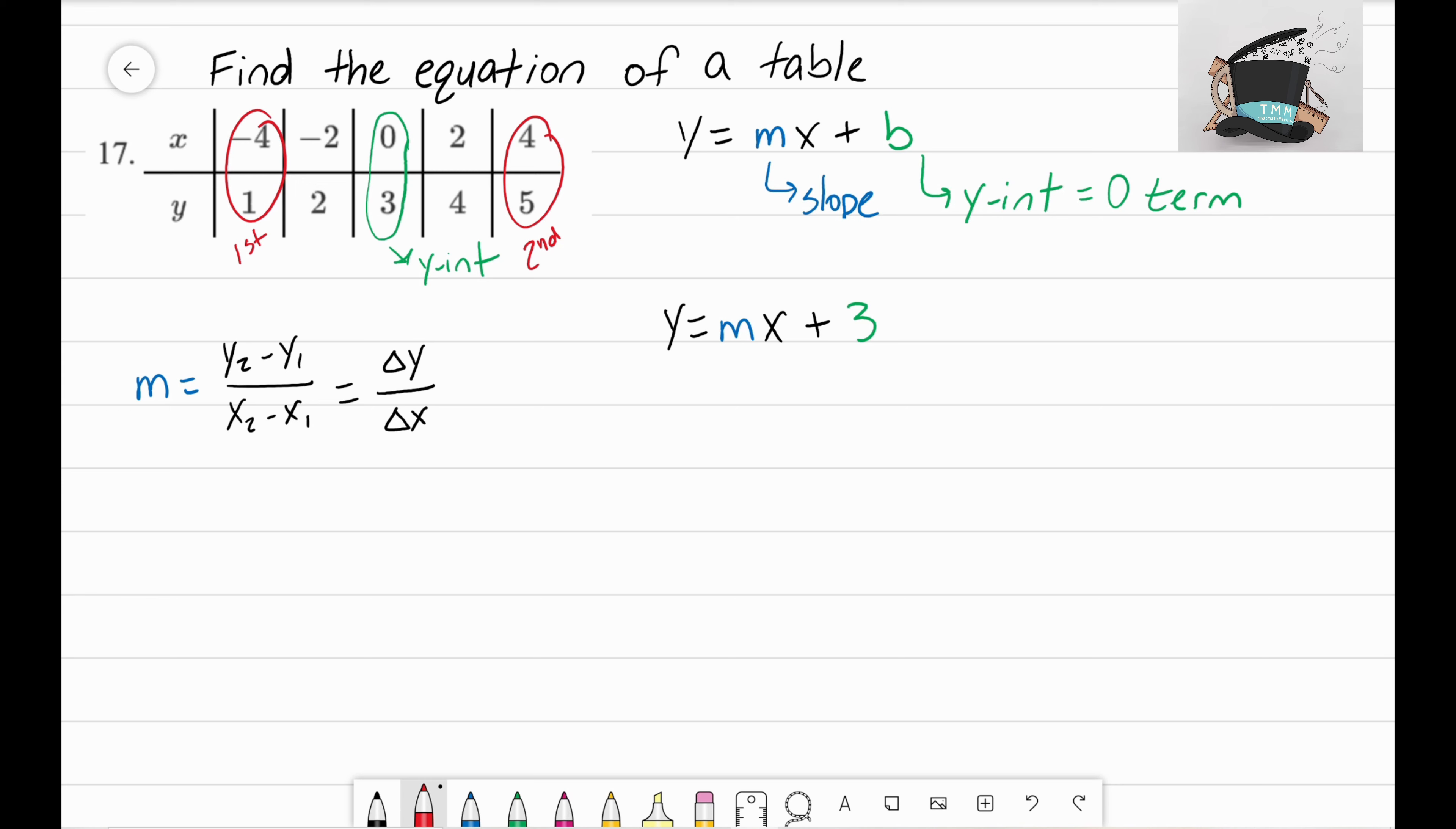We have y2 minus y1. Well, my y2 here is 5 minus my y1 which is 1, over my x2—here's my second point, here's my x2, it's 4—minus my x1 which is negative 4.